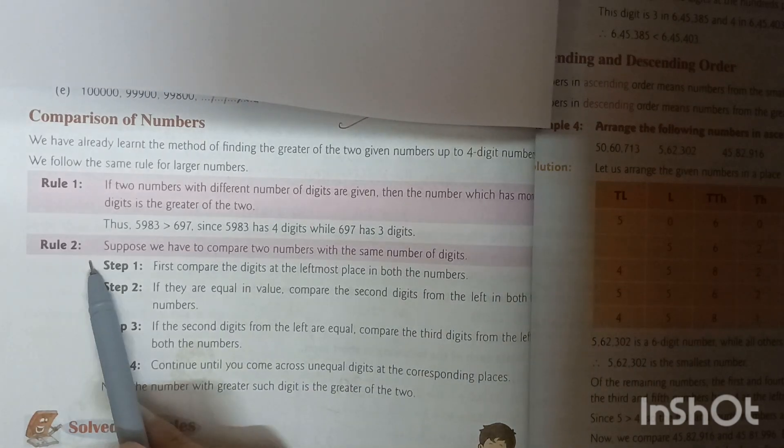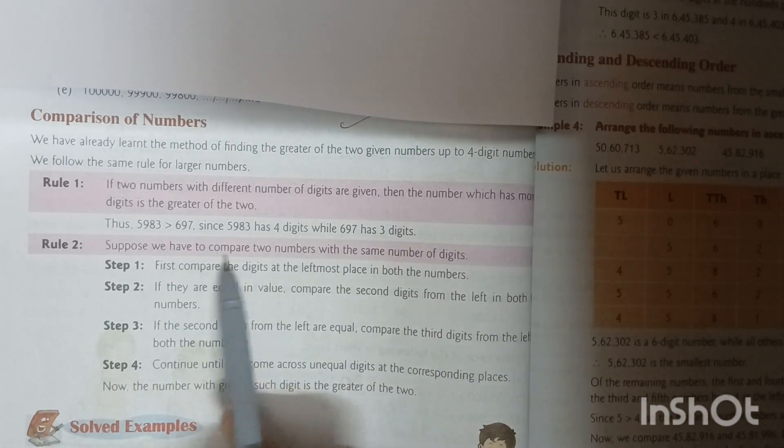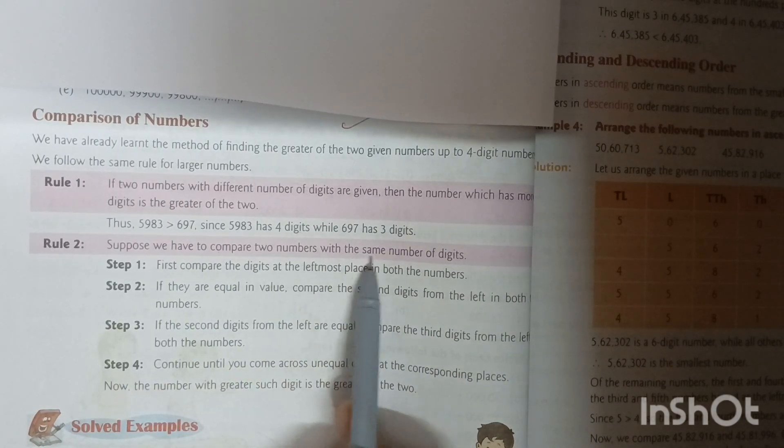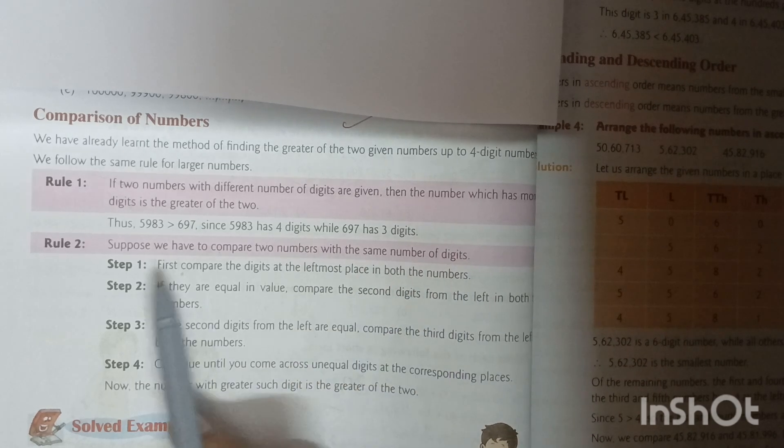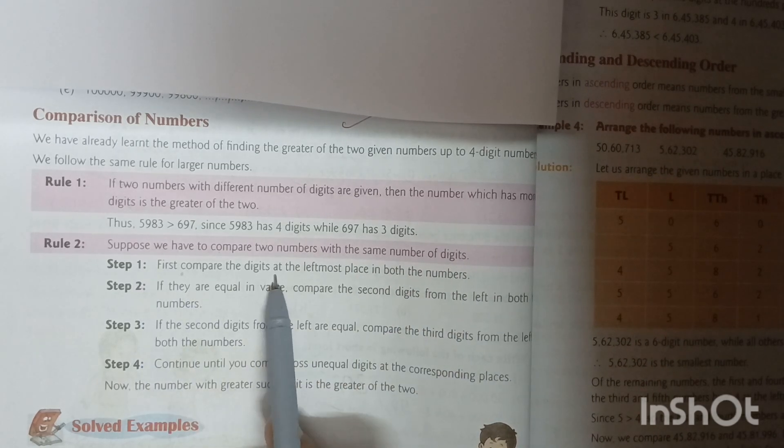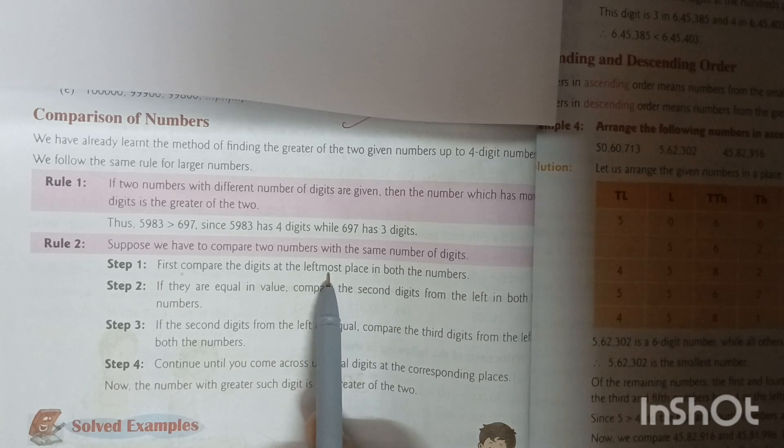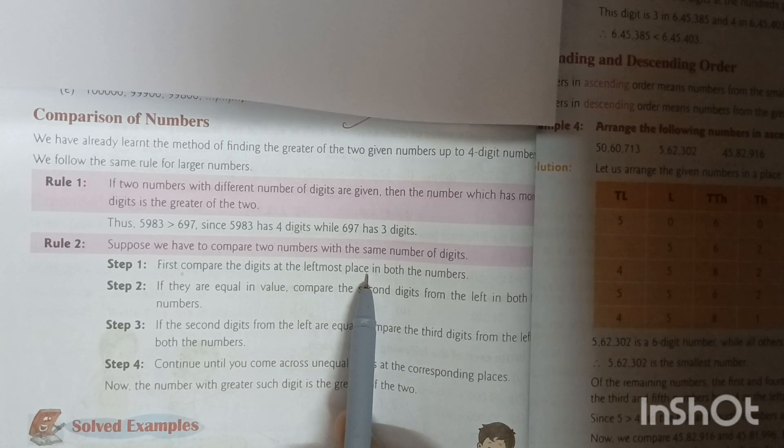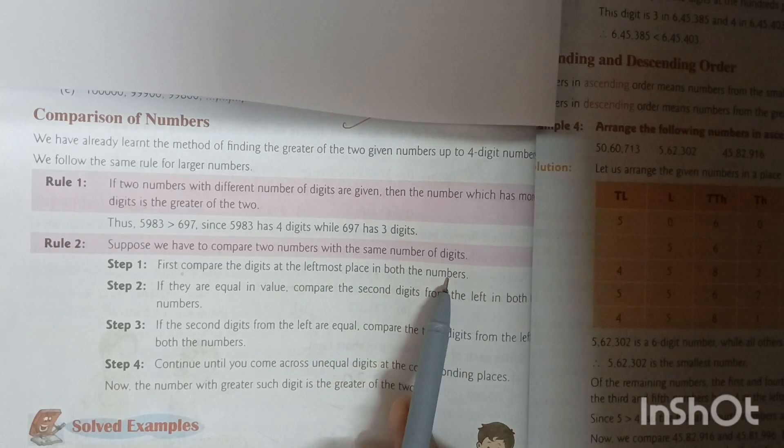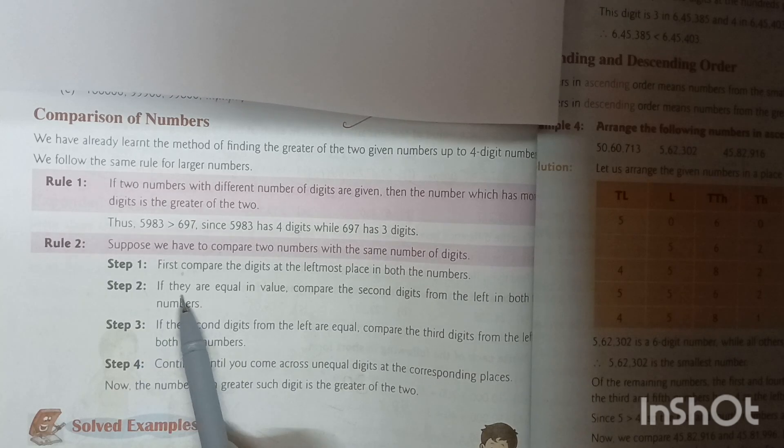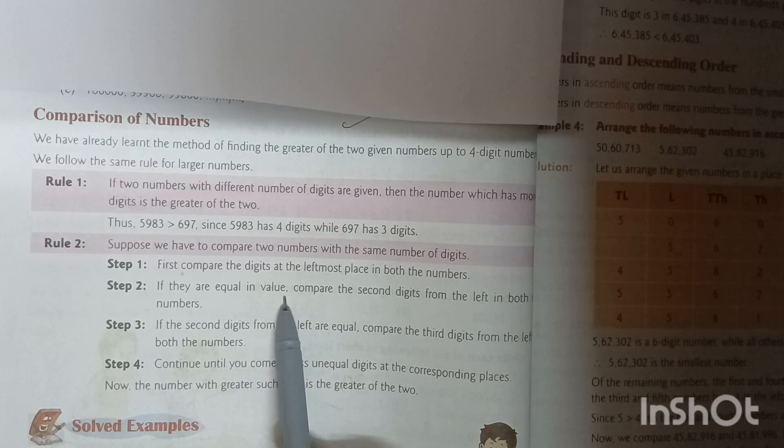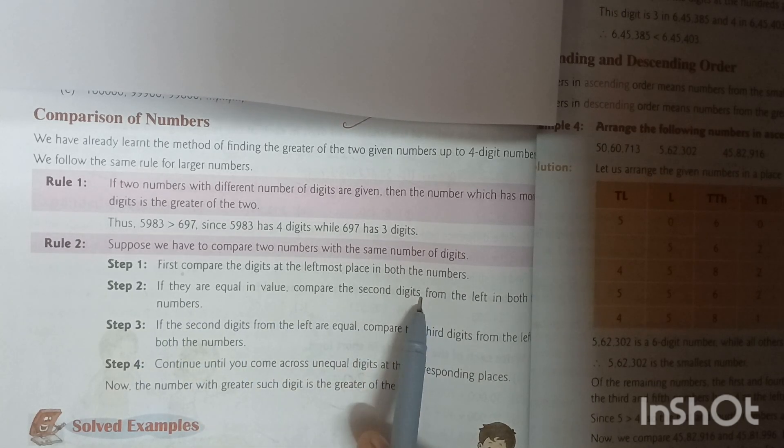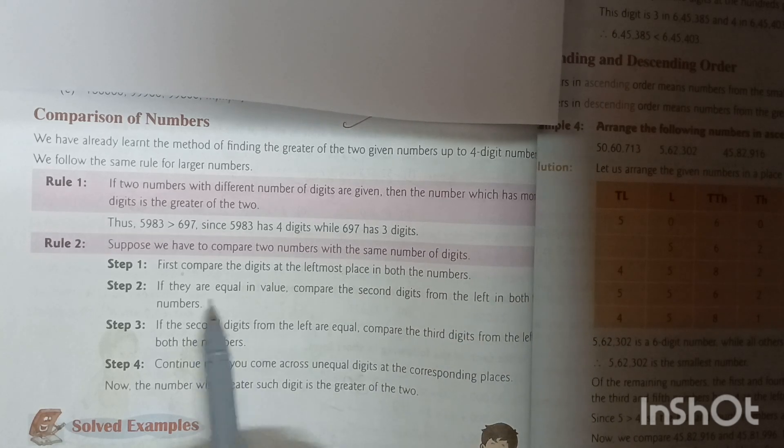Rule 2: Suppose we have to compare two numbers with the same number of digits. Step 1: First, compare the digits at the leftmost place in both the numbers. Step 2: If they are equal in value, compare the second digits from the left in both numbers.